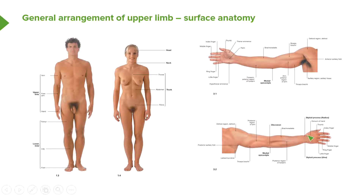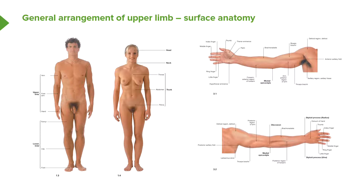Passing to the hand, we can see the thumb, index, middle, ring, and little fingers again making up the digits, and we can see the dorsum of the hand. The forearm is connected to the hand via the wrist joint, and we have two what are known as styloid processes of the radius and the ulna. We'll look at these in detail when we look at the osteology, but both styloid processes — the radius being lateral and the ulna being medial — can be palpated at the wrist joint.